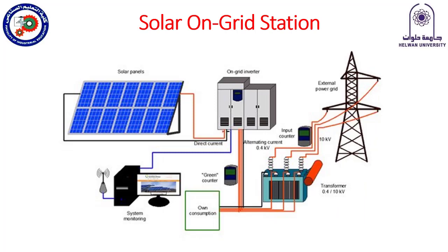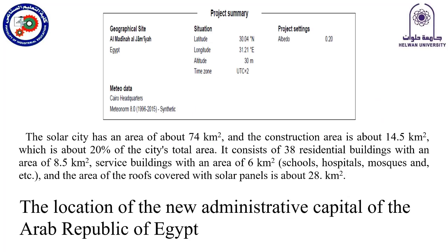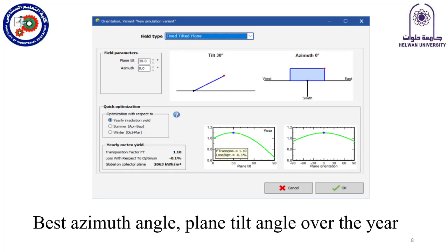For this design, we consider an on-grid station by which we export the excessive energy to the public grid. The location assigned for this station is in the new administrative capital of Egypt, with a total area of about 74 square kilometers, and about 28 square kilometers allocated for solar panels.